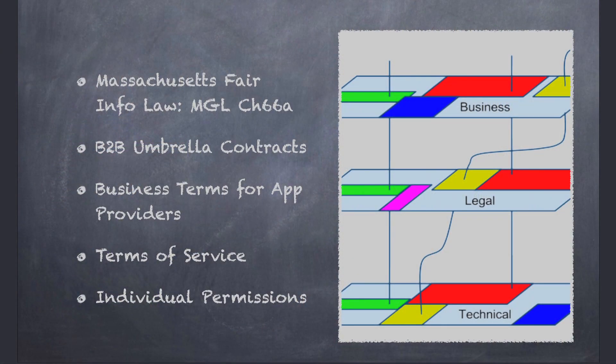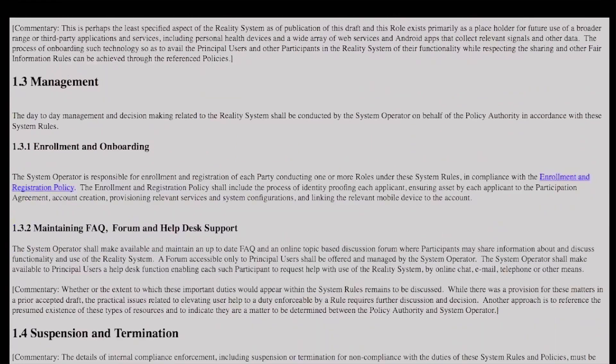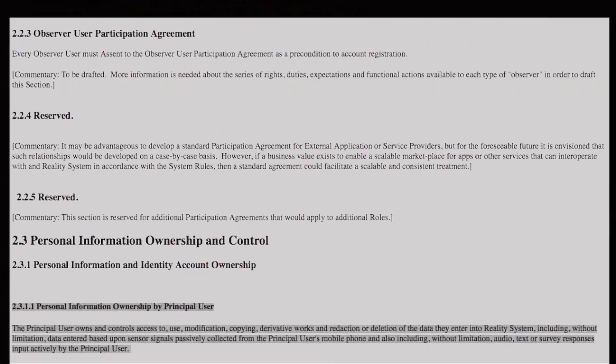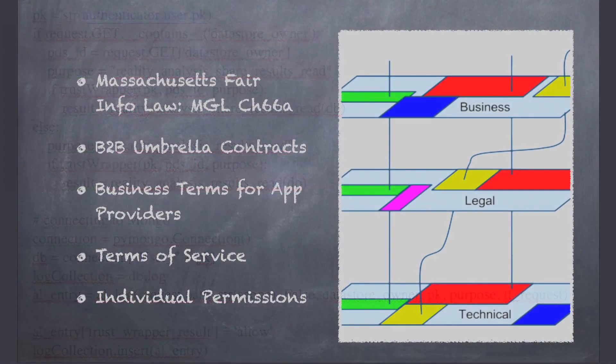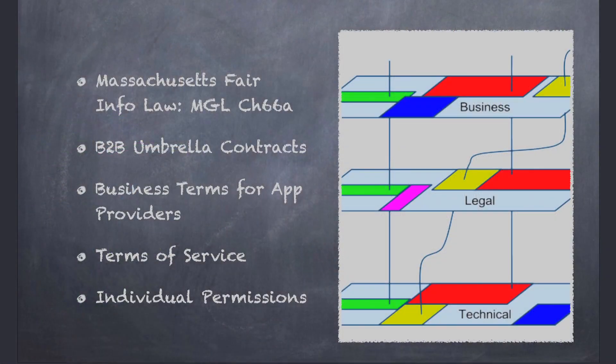Go down one level and you have the capability to express these key rules and expectations as terms of service for app developers and service providers integrating with online services in the context of these state systems. Go down one more level and you can see terms of service that the end user — the patient, the person going to a clinic, a person seeking health and human service benefits — can click on a mobile app, on a web browser, any kind of service online, and now be within that fabric of the law integrated at a business, legal, and technical level.